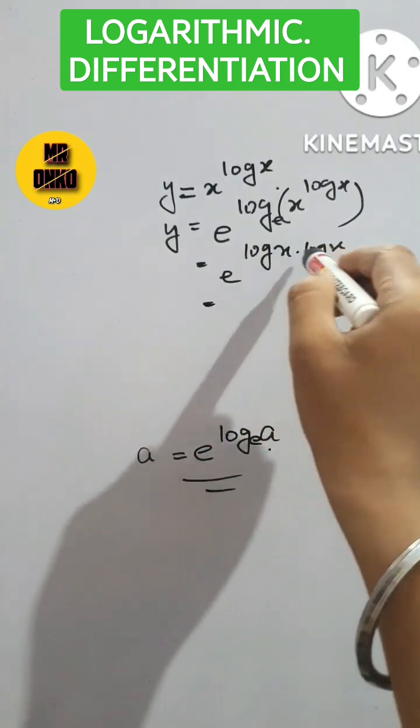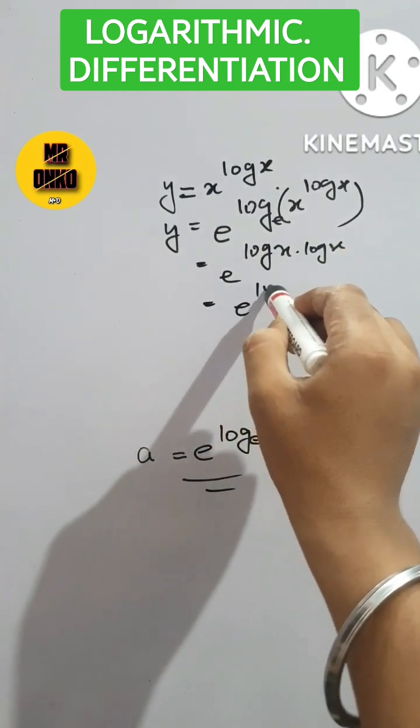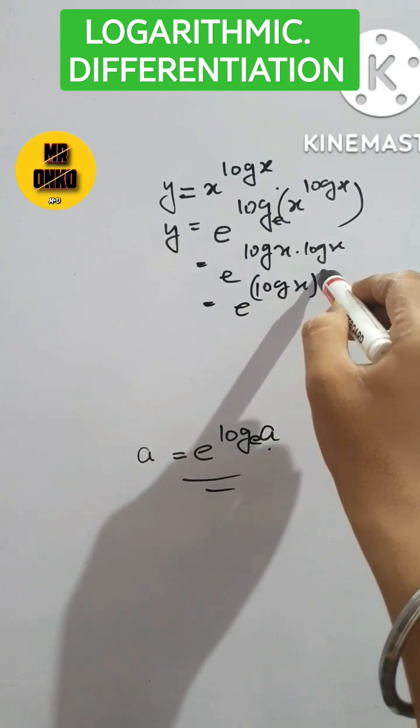Both log has base e, so it will be e to the power log x whole square.